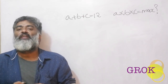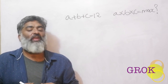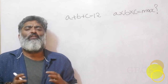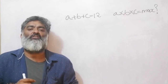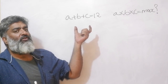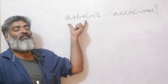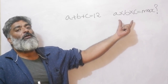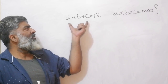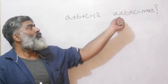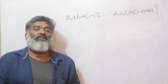Hello and welcome back. Another day, another topical journey — this time looking at maxima and minima questions revolving around AM-GM. We are looking at questions where a sum is given for two or three terms and the question is: what would be the maximum value of the product? For example: a plus b plus c equals 12 — what is the maximum value of a times b times c?